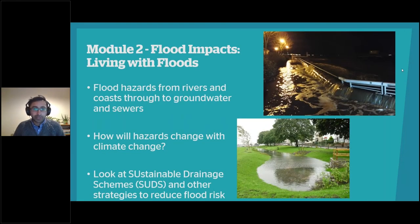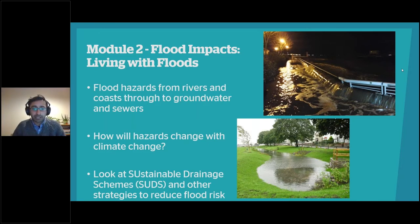Module two, run by Rob Thomas, is on Flood Impacts: Living with Floods. This is about understanding the different sources of flood hazards — from river to coastal, through to groundwater and sewer flooding. Understanding the different types of flooding can help to manage and prepare for them in future. A key question is also how hazards will change with climate change. The module also looks at sustainable urban drainage systems (SuDS) and other strategies that can be used to reduce flood risk and contribute to developing flood resilience.